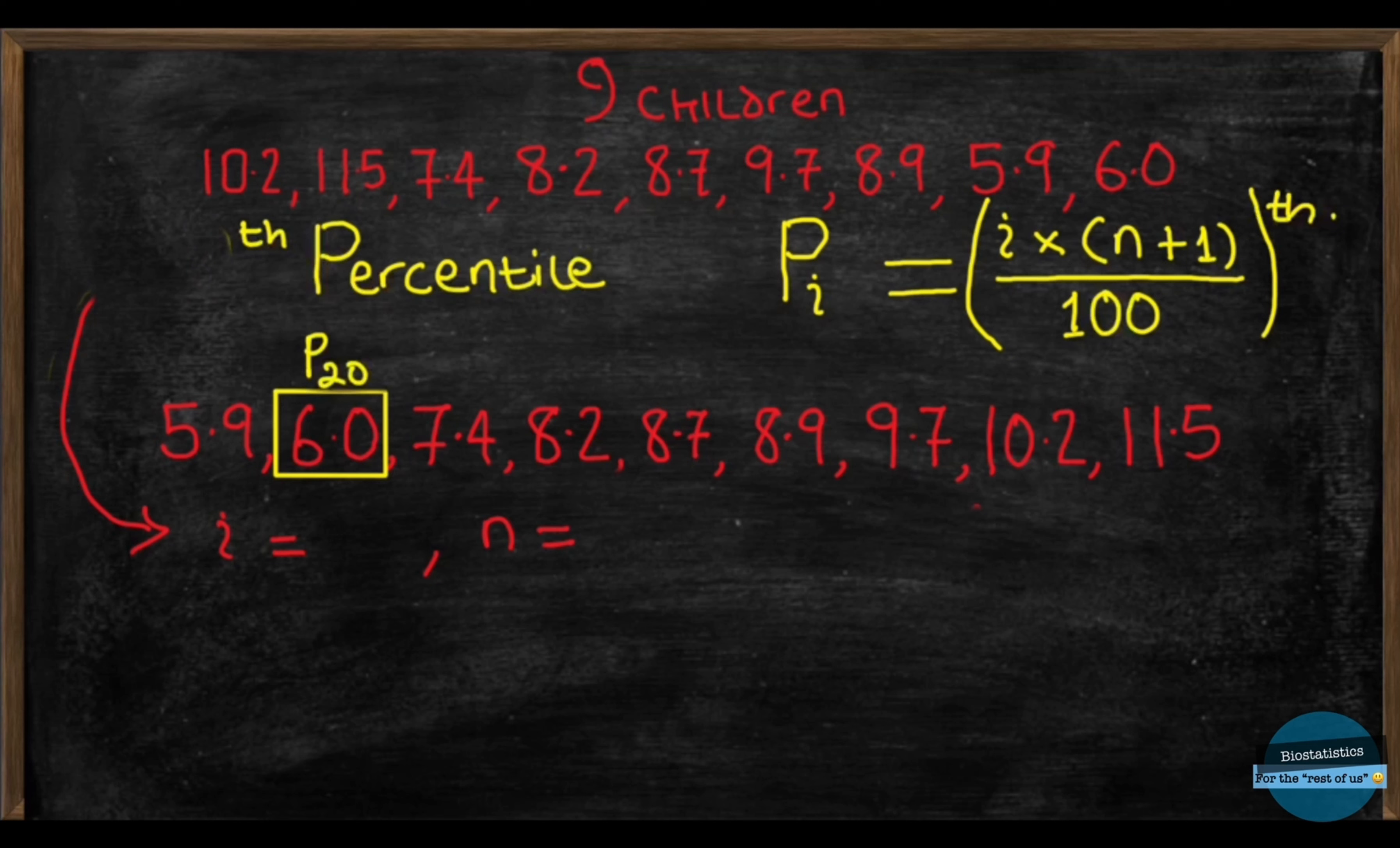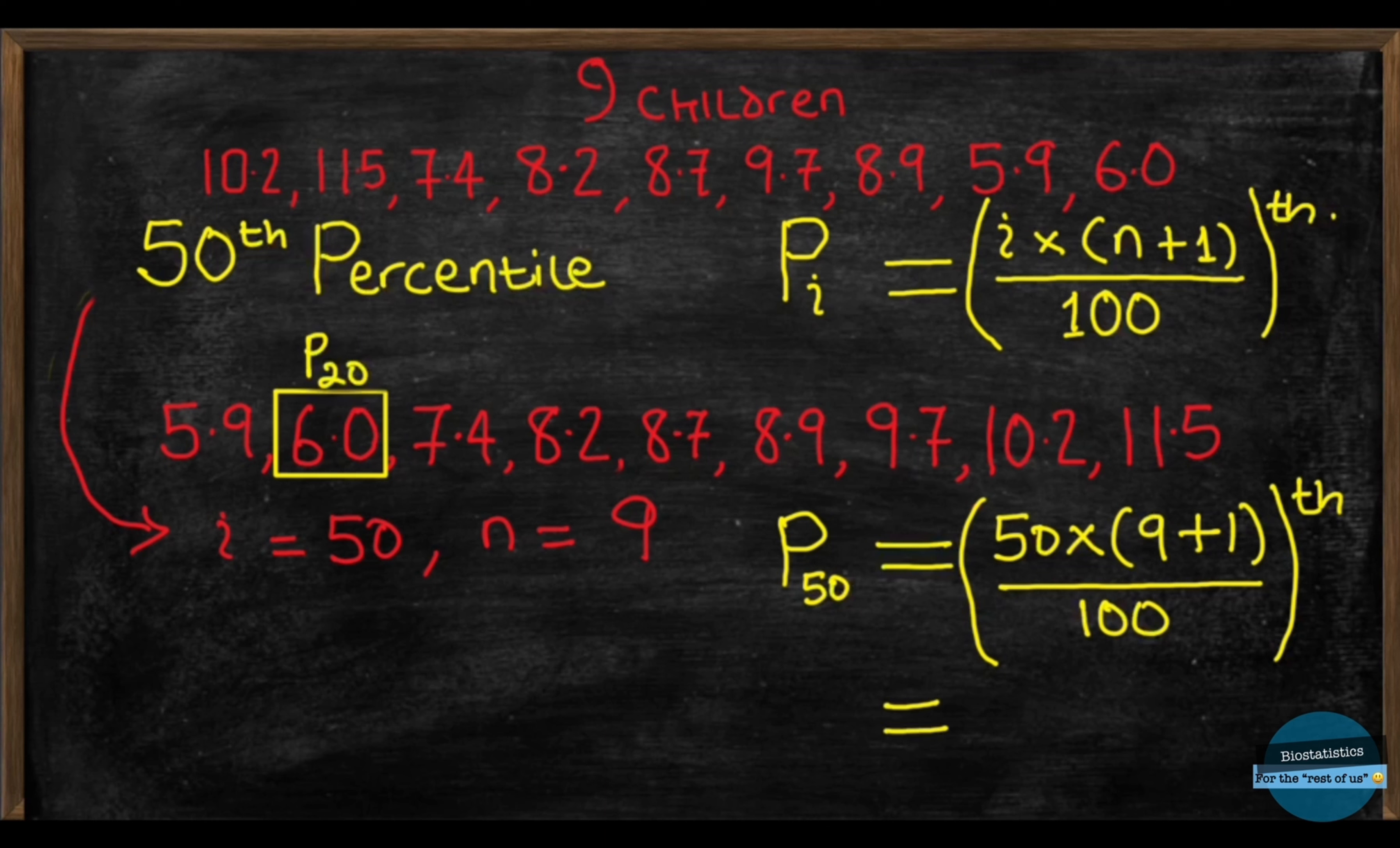So, let's find the 50th percentile. That's the median, right? Using our nice formula, i will be 50, n is 9 because we know there are 9 children and putting both of these into the formula, we'll have p50 is equal to 50 times 9 plus 1 in bracket, all divided by 100. And this will give us 500 divided by 100 which is 5.